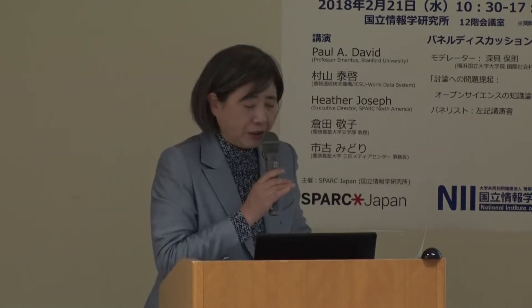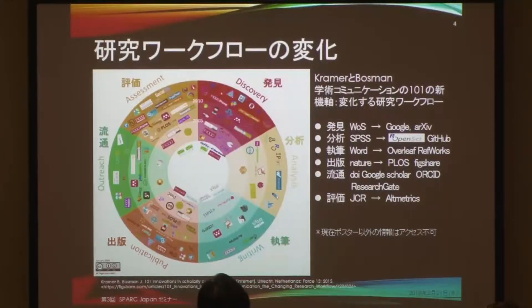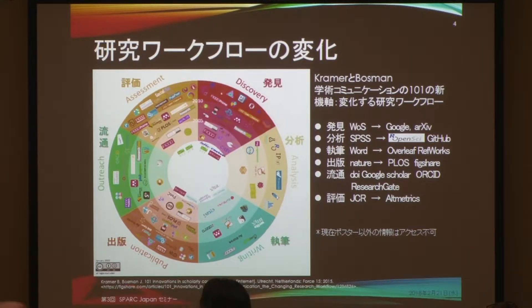When I look at the elements, there are many commonalities among these. I picked up one — this is by Kramer and Boseman, announced at a conference in 2015: '101 Innovations in Scholarly Communication.' Inside the spiral is around 2005, and I think the outer limit should be around 2010.